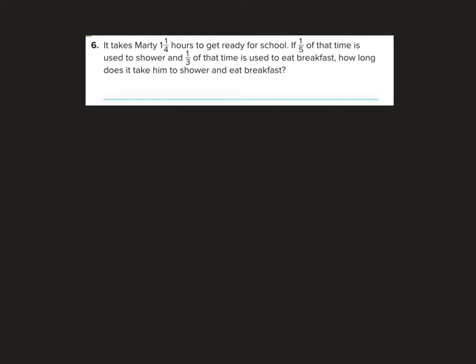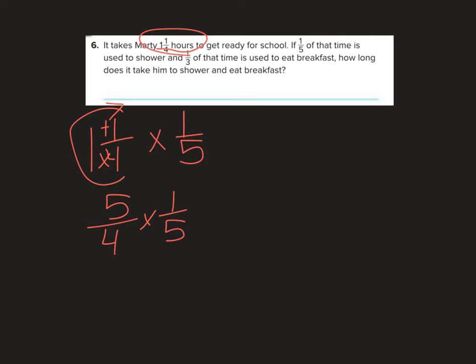It takes Marty one and one-fourth hours to get ready for school. If one-fifth of that time is used to shower, and one-third of that time is used to eat breakfast, how long does it take him to shower and eat breakfast? So if I find what is one-fifth of one and one-fourth - we know this is five-fourths. If I circle up, four times one is four, plus one is five. So five-fourths times one-fifth - divide by five and divide by five - I get one-fourth of an hour for showering.